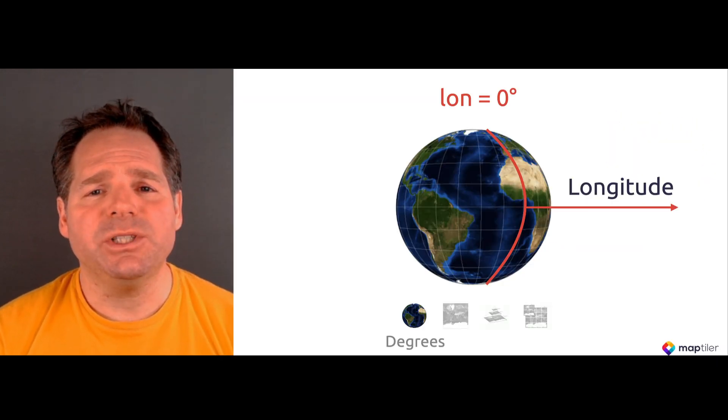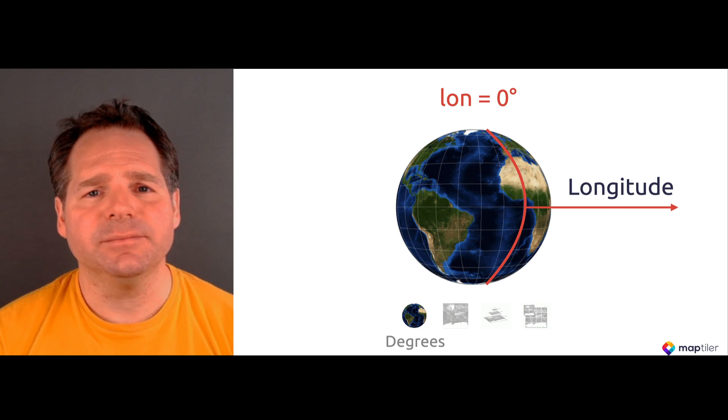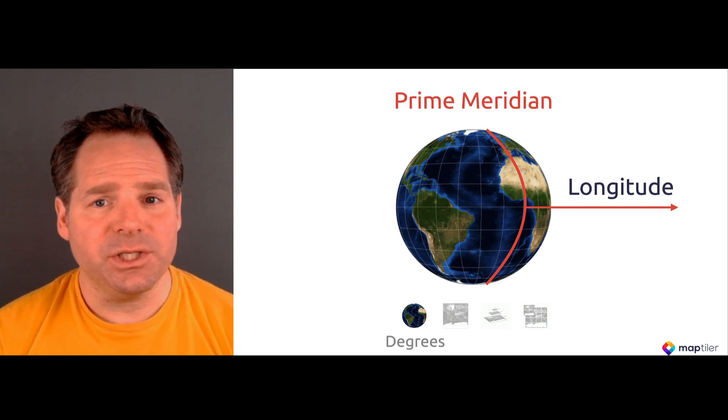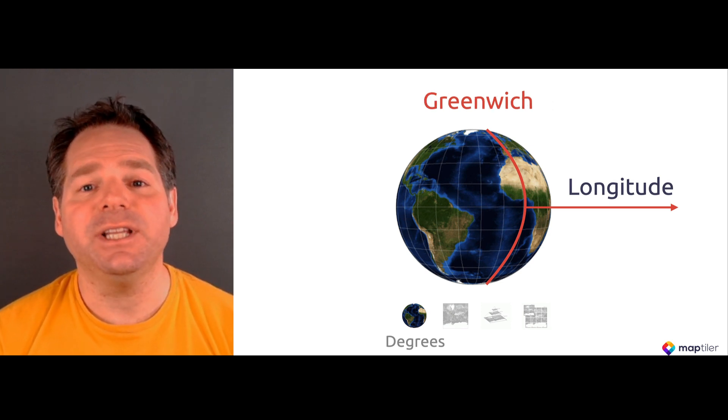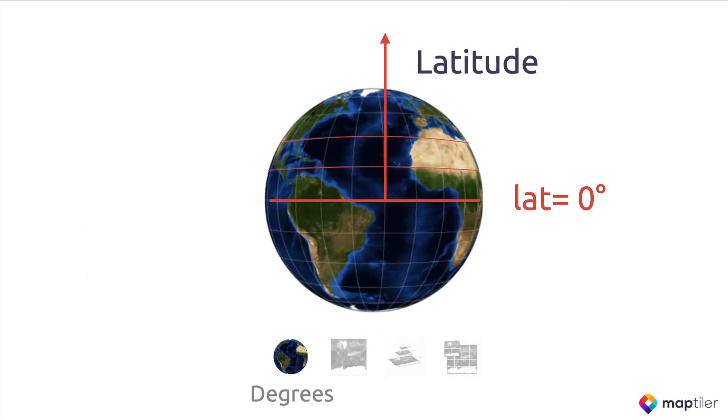Points with the same longitude create a line called a meridian. The origin of the grid, with a longitude equal to zero, is called the prime meridian. Normally this is the one that runs through Greenwich in London. Points with the same latitude create a circle called a parallel. The parallel at zero degrees latitude is called the equator.